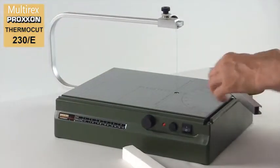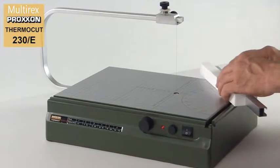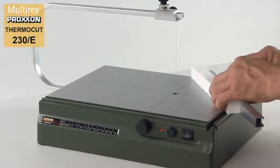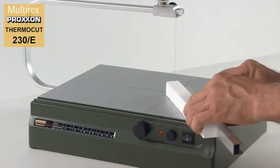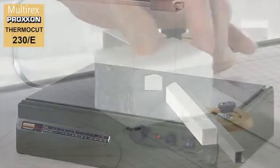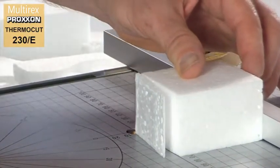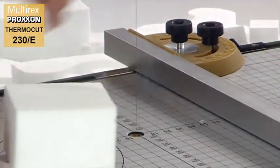And don't worry, the integrated isolation transformer and Class 2 protective insulation ensure that the ThermoCut 230E is absolutely safe and the hot wire cuts with a completely safe voltage of 10V.